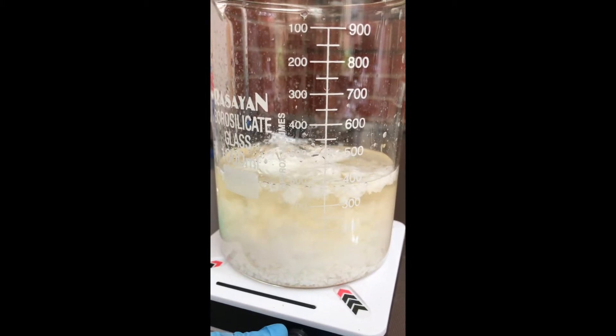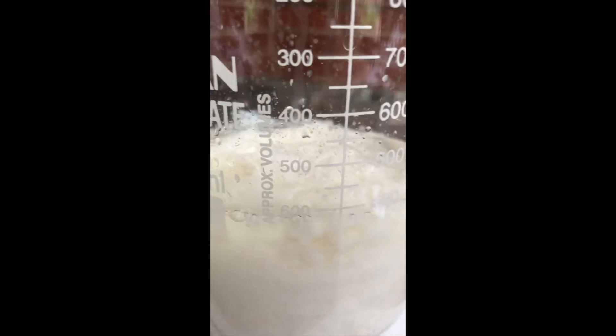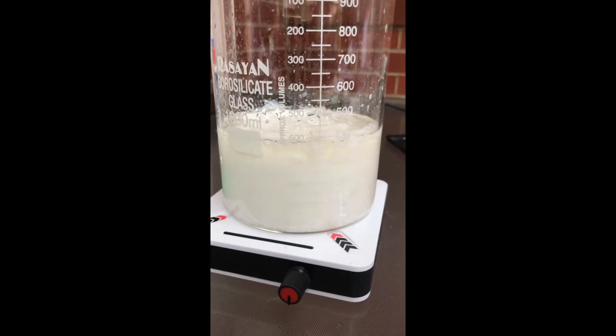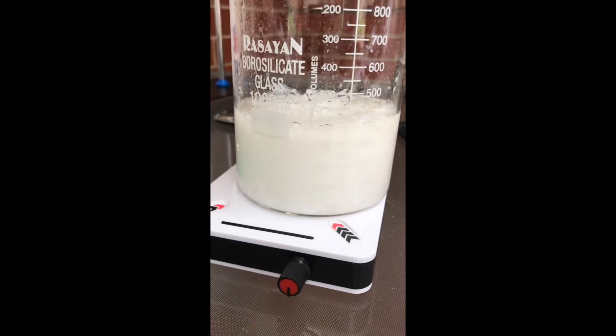One of the compounds you can see forming is calcium hydroxide. This is the white clumpy looking compound that precipitates as a solid out of the solution. The other compound is sodium acetate which is highly soluble and remains in the solution.